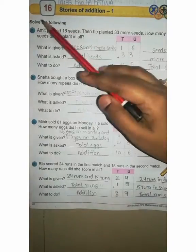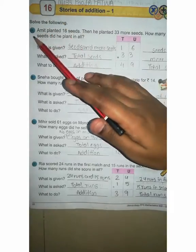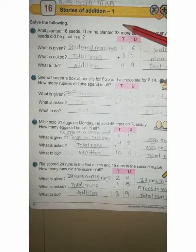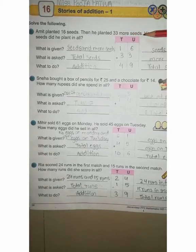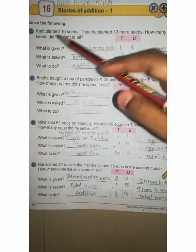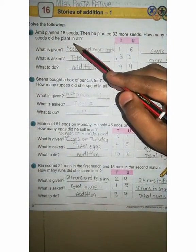Okay? Now we read the question, then after we know it, we what to do in this question. Solve the following: A. Amit planted 16 seeds, then he planted 33 more seeds. How many seeds did he plant in all?